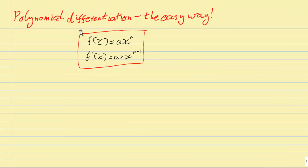So here is how to differentiate a polynomial the easy way. Each term of the polynomial can be written like this: a times x to the power of n.